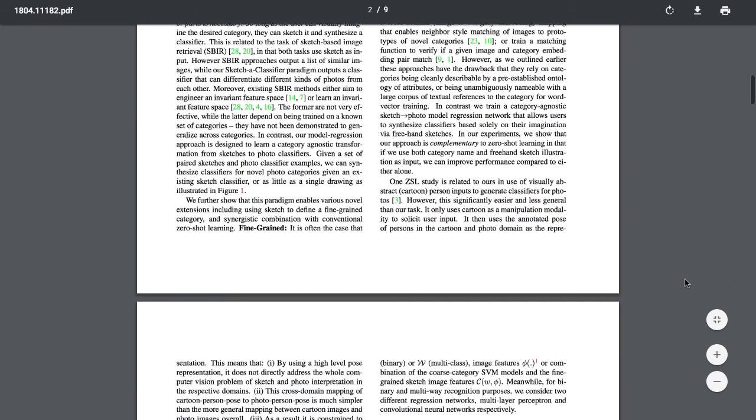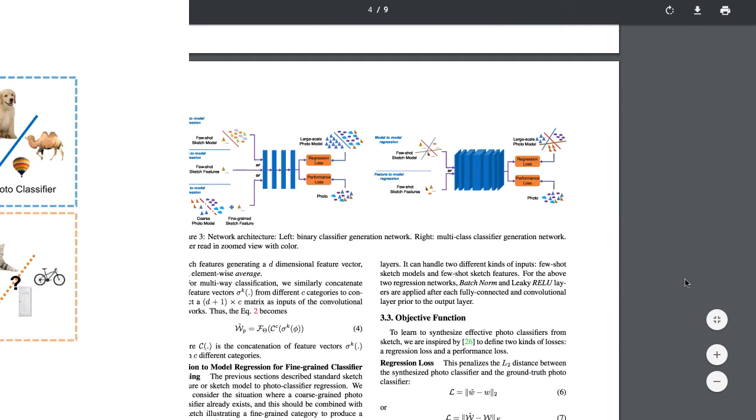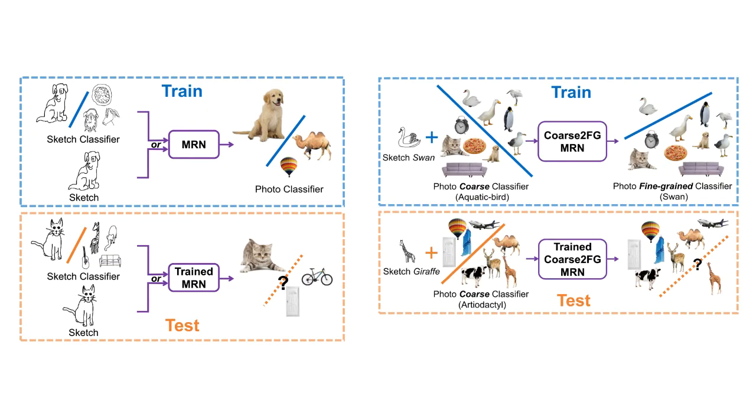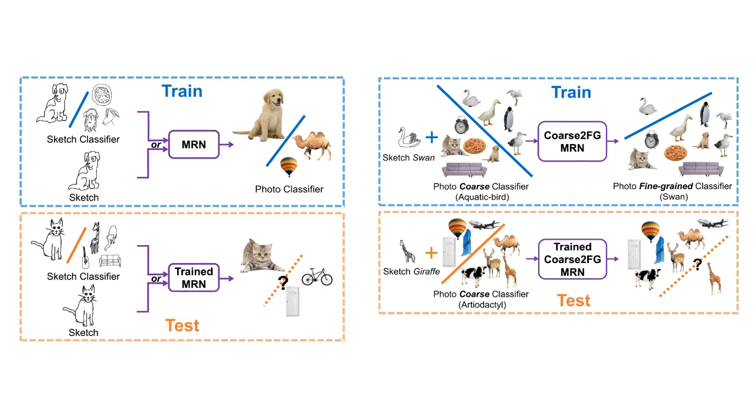We are going to discuss three types of models that leverage drawings, or sketches, to synthesize image classifiers. The first model converts a sketch classifier to a photo classifier. The second model uses a sketch, or some sketches, to synthesize a photo classifier. And the third model uses some sketches and a photo classifier to synthesize another, more fine-grained photo classifier. These models that do the magic are called model regression networks, or MRNs. Notice the goal of an MRN is to generate an image classifier. Let's take a look at the three ways of doing this, using sketches, with some math.